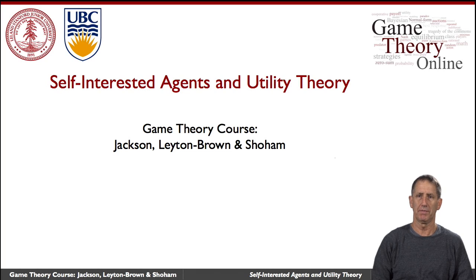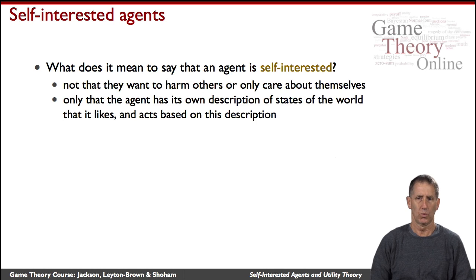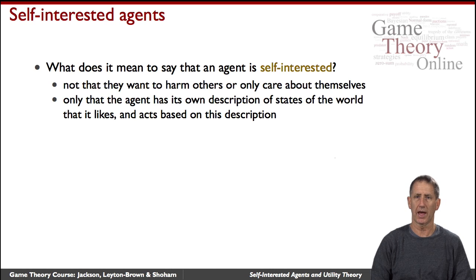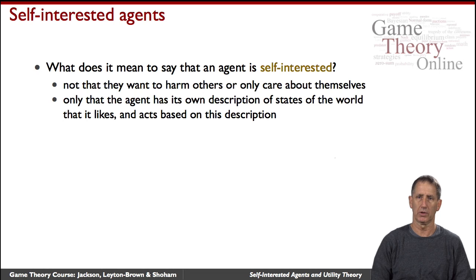We will be talking about self-interested agents and their interactions. We don't mean necessarily that agents are adversarial or don't care about what happens to other agents. What we mean is that agents have opinions, have preferences. There's some description of the world, how the world could be, and in different descriptions the agents have different preferences and different utilities, as we'll say.